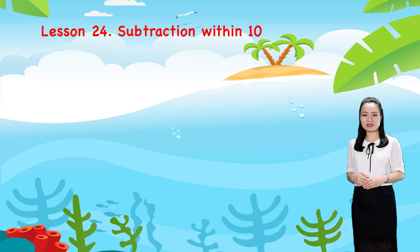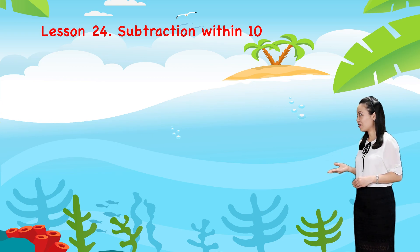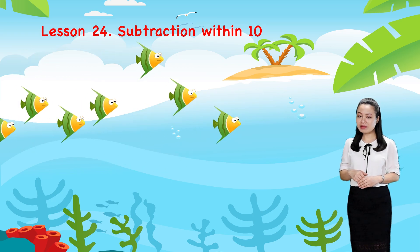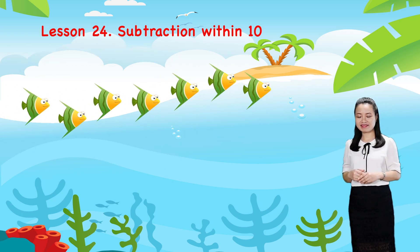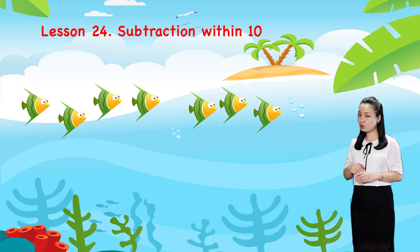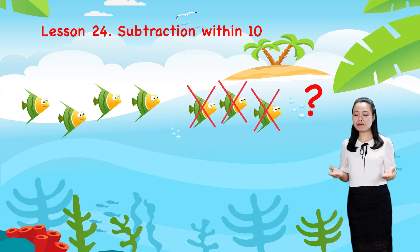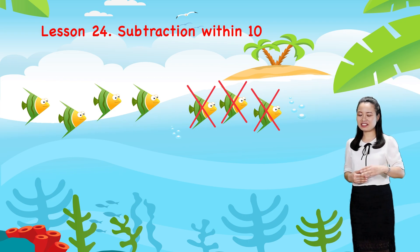First, let's take an example of subtraction. Look, there are seven fish swimming in the sea. Then, three fish swim away. How many fish are left? Let's count.